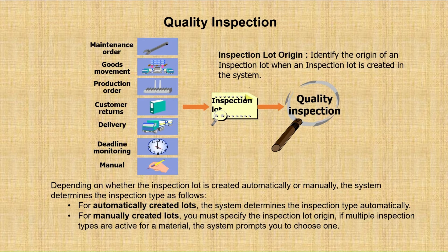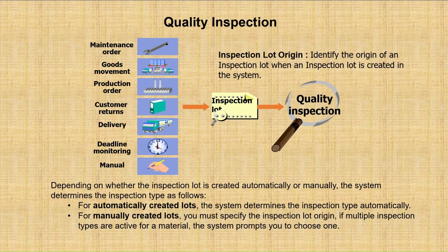Normally, inspection lots are automatically triggered once a particular transaction has been done — whether it is a purchase order, a production order, or a sales order is created, the relevant inspection type lot will be triggered. But in the case of a manual inspection lot, it is not automatically triggered. We are manually creating the lot and here we need to specify the inspection lot origin. If it is a manual inspection lot, then we specify the origin as 89.